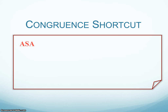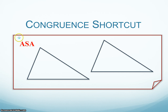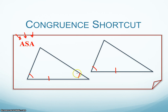So we have another congruent shortcut. It's very similar but kind of opposite. We have angle-side-angle, ASA — so two angles with the side between them. If I have an angle congruent to this angle, and then a side congruent to this side, and then another angle immediately after it, so the side is completely between the two angles — that would be angle-side-angle.